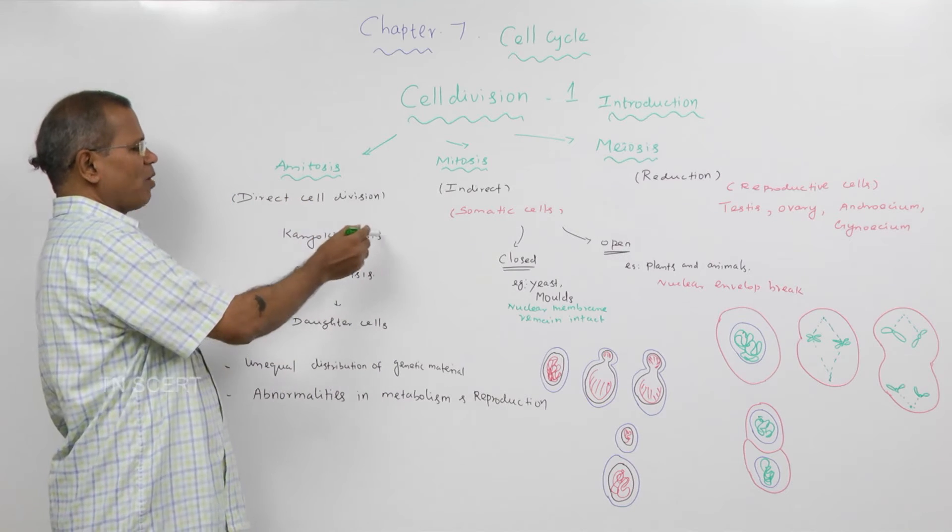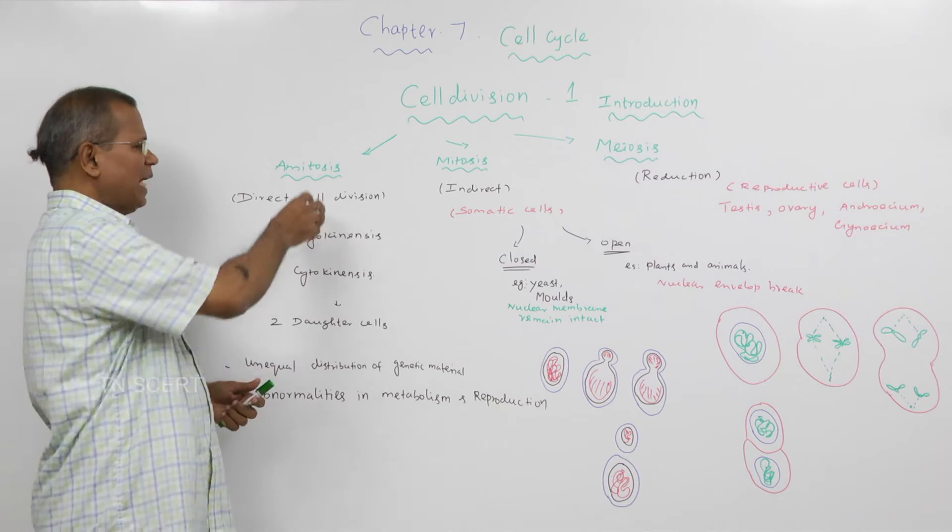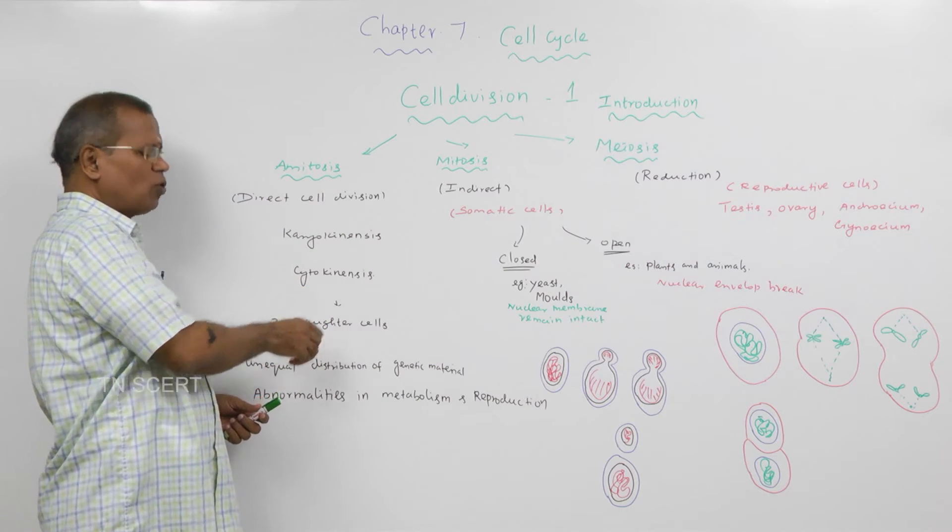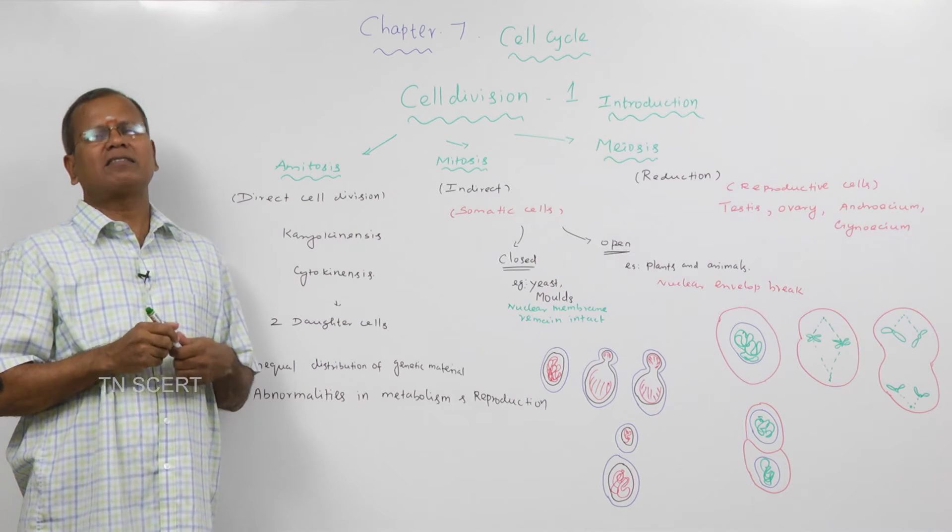Division of the nucleus is said to be karyokinesis and division of cytoplasm is said to be cytokinesis. Utkaru peridhalai karyokinesis endaum cytoplasm peridhalai cytokinesis sum enda adeparum. In the end of amitotic cell division, two daughter cells are formed. Amitosis cell peridhalin irudhiyil, irandu sayiselgal uruvahum.